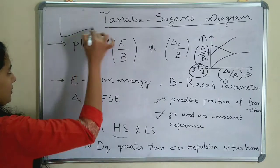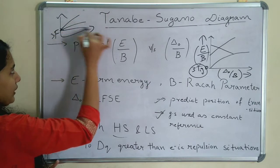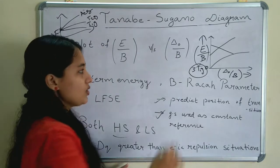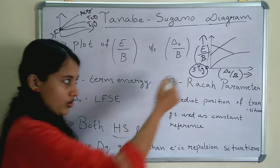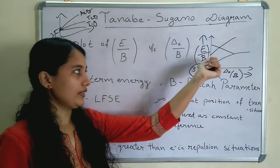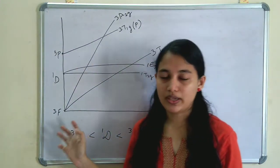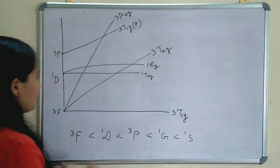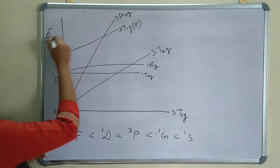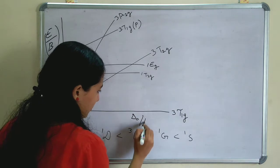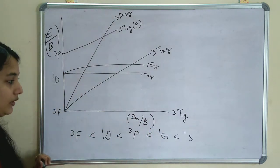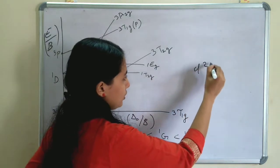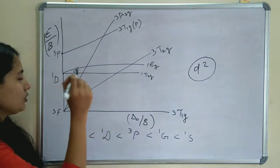In the orbital diagram, the 3F term splits into 3T1G, 3T2G, and 3A2G, and 3P gives 3T1G(P). This is the orbital diagram for the D2 system. In the Tanabe-Sugano diagram, the splitting is the same: 3T1G, 3T2G, and 3A2G from the 3F term. The ground state 3T1G is taken as zero. The next term 3P gives 3T1G(P), and 1D gives 1EG and 1T2G.